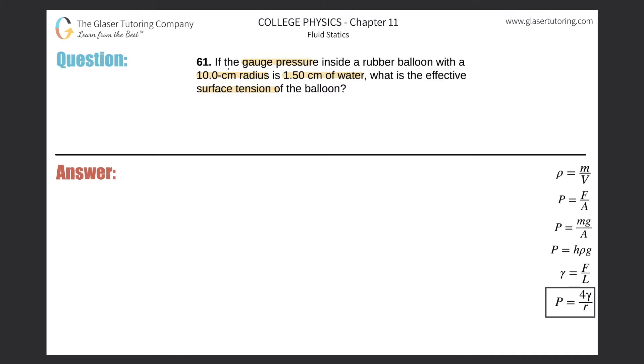So here let's write the formula down: the pressure is going to be equal to four multiplied by our surface tension all divided by r. Let's solve this for the surface tension, meaning the gamma. So this is going to be basically the surface tension will be equal to the pressure times the radius all divided by four.